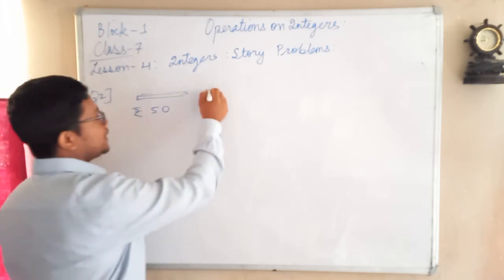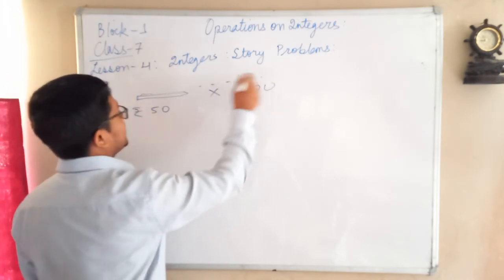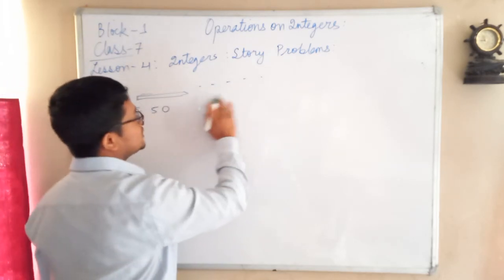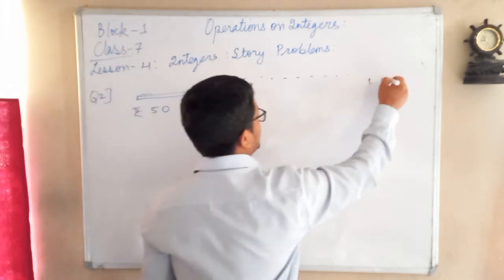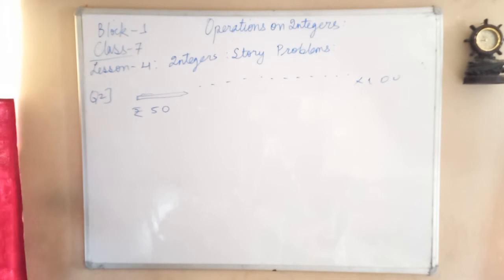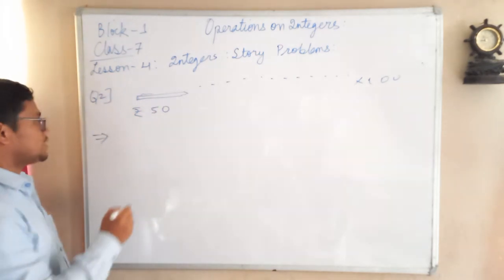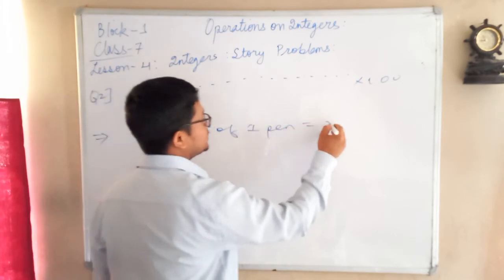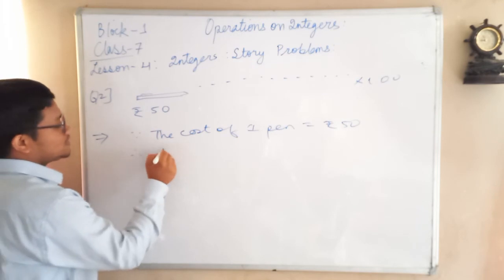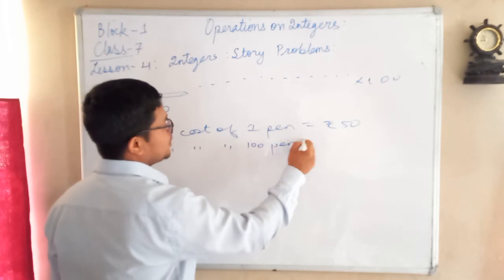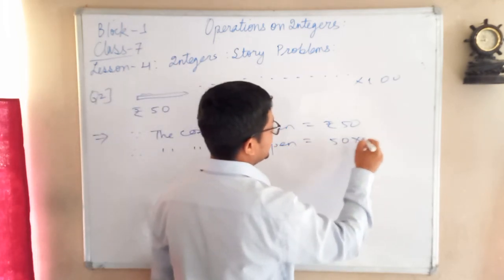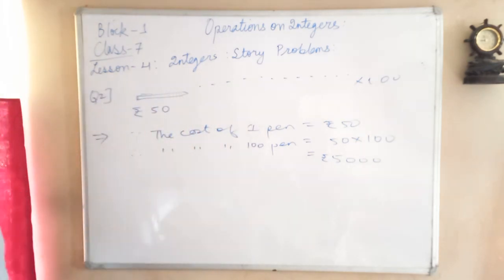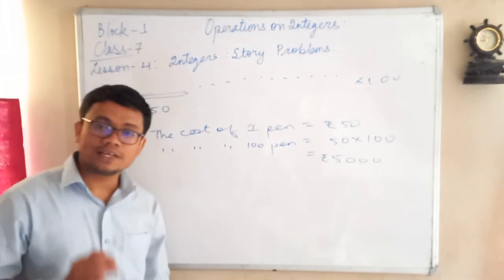What will be the cost of 100 pens? Since the cost of one pen is 50 rupees, to find the cost of 100 pens you have to multiply. One hundred times 50 equals 5000 rupees. So the cost of 100 pens is 5000 rupees.